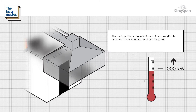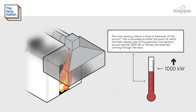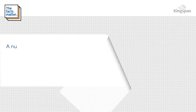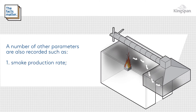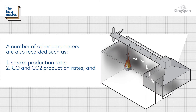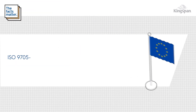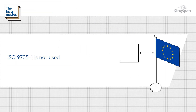The main testing criteria is time to flashover. If this occurs, it is recorded as either the point at which the heat release rate of the specimen and ignition source reaches 1,000 kilowatts, or flames are observed coming through the door. A number of other parameters are also recorded, such as smoke production rate, CO and CO2 production rates, and oxygen depletion rate.